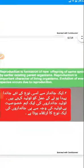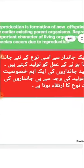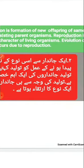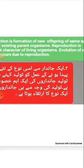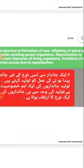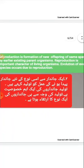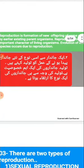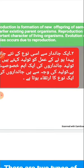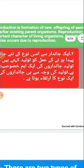Evolution of every species occurs due to reproduction. Due to reproduction and genetic recombination — as we have studied about evolution — in sexual reproduction, when a cell divides by meiosis, new genes recombine and are transferred to new generations. This causes new characters to develop in organisms, and that is how evolution takes place.